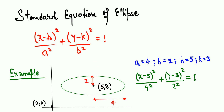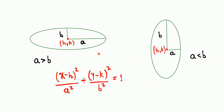With a=4, b=2, h=5, k=3, substitute into the standard equation to get the equation for that ellipse. There are two types of ellipse orientation: if a > b, the major axis is horizontal — a horizontal ellipse; if a < b, the major axis is vertical — a vertical ellipse. The center points are h and k.